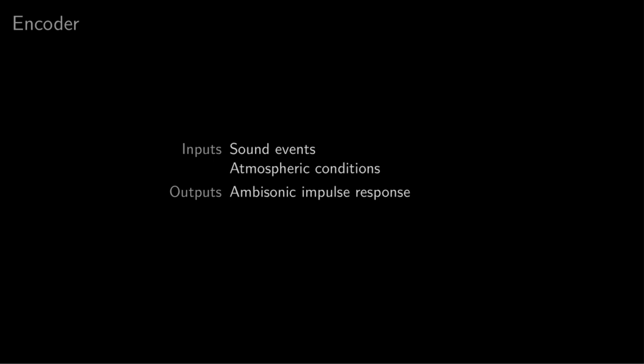The second component is what we call the encoder. What it essentially does is convert the list of sound events that we generated using the raytracer into an ambisonic impulse response. The final room impulse response is essentially a series of delayed, filtered, and scaled Dirac impulses, and each one of those Dirac impulses corresponds to a sound event that was given to the encoder.